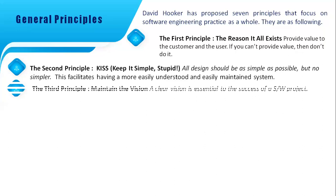The third principle is to maintain the vision. A clear vision is essential to the success of any software project. If you don't have any vision, there is a higher probability that your software will fail. If you neglect the architecture vision, then the software system weakens and will eventually break, even the well-defined system you have designed. Maintenance of a good architecture vision ensures a very successful software project.